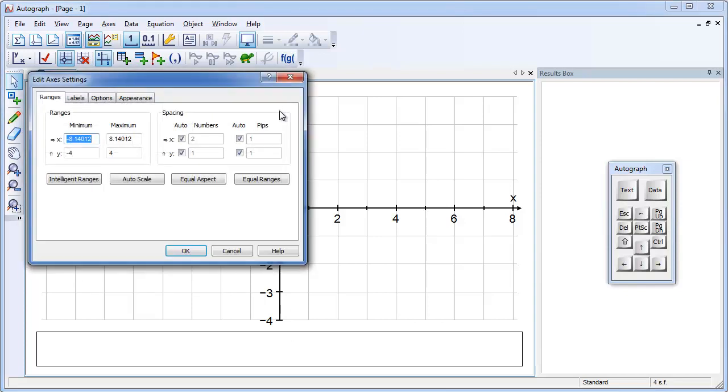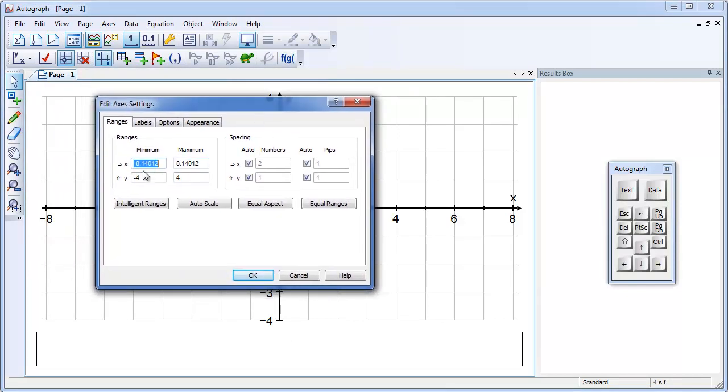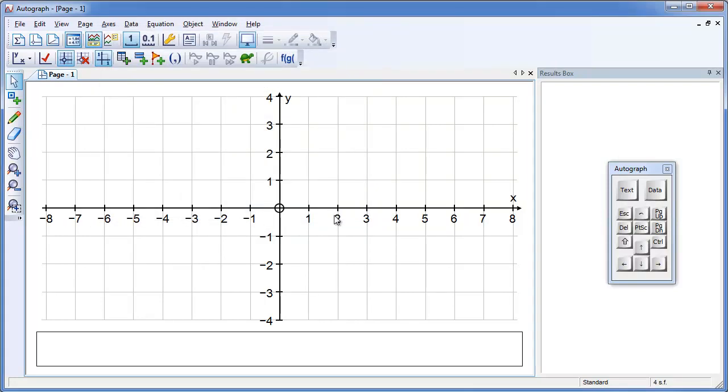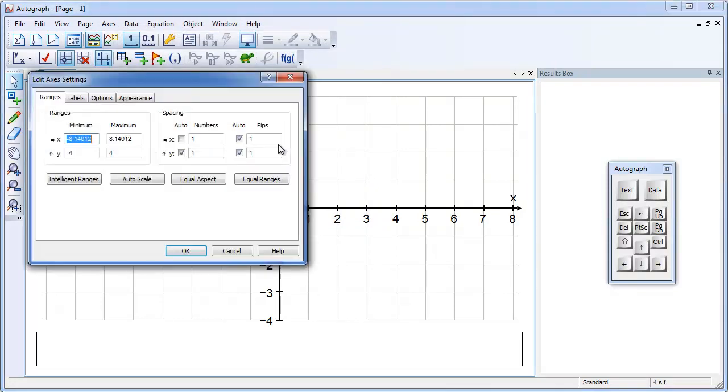So if I double click on the axis I can open up the Edit Axes settings. This is where you can fix the numbers and the pips. It's going in twos at the moment. Every two and the pips are going every one. But you can adjust all that by just undoing this and putting one here for example and that means it now goes in ones. If I change the X scale and equal aspect is on there really isn't a lot of point in doing that.